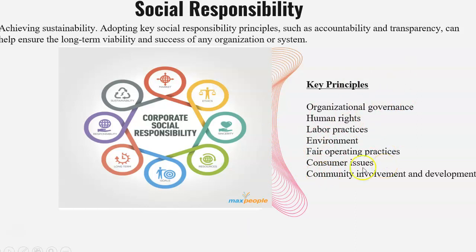Consumer issues — if consumers have issues with your products, you need to make sure that you address them and that they're satisfied. If you have made a mistake, you need to sort it out and repair it for them. Community involvement and development — you need to make sure that you're involved in the community, taking care of it and doing work for its development. We gave an example of planting trees — doing something ethical for the development of the community.